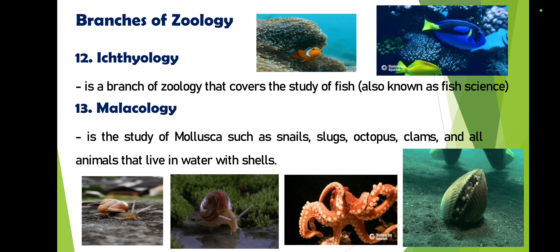Ichthyology is the branch of zoology that covers the study of fish, also known as fish science. All species pertaining to fish are covered by ichthyology. Examples of fish include goby fish, anabas, eel, catfish, skate fish, snapper, and grouper.